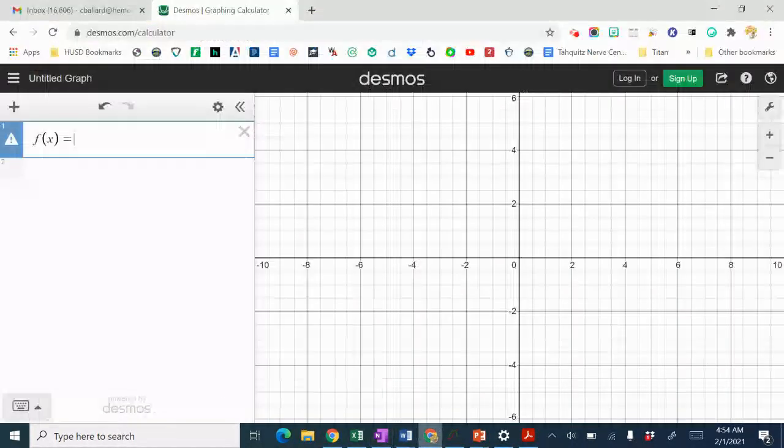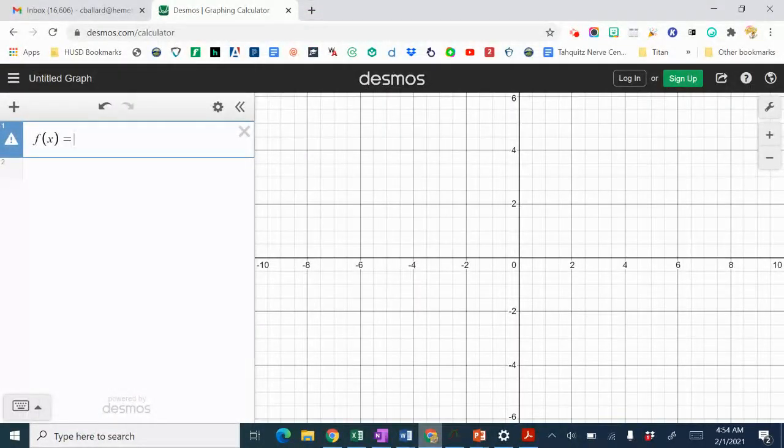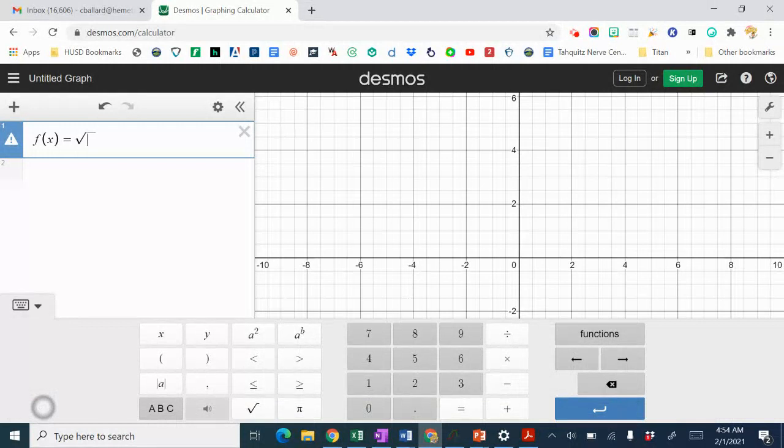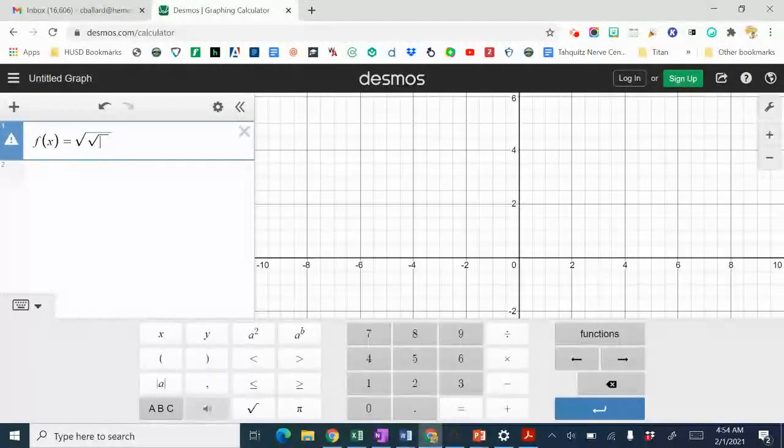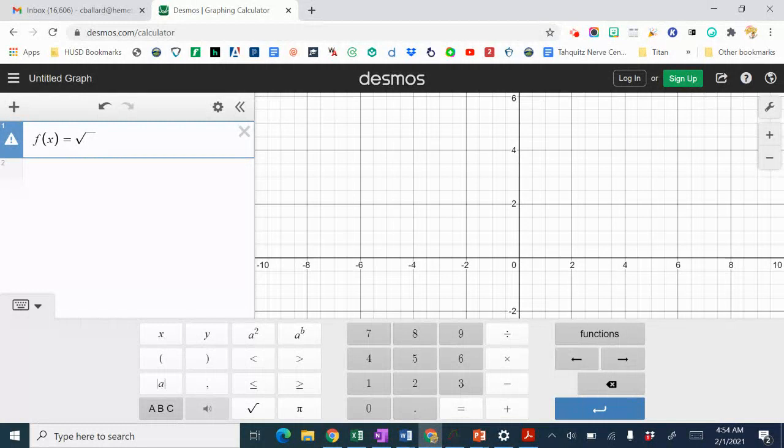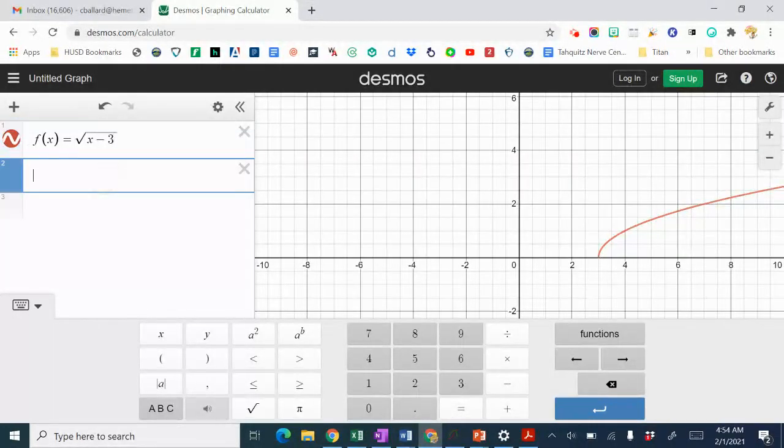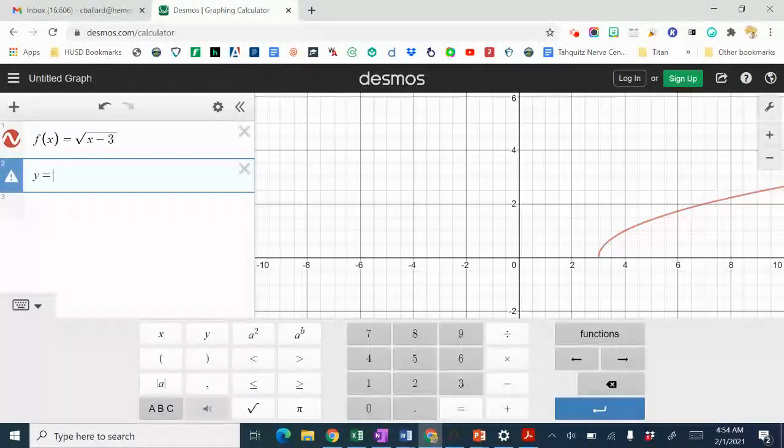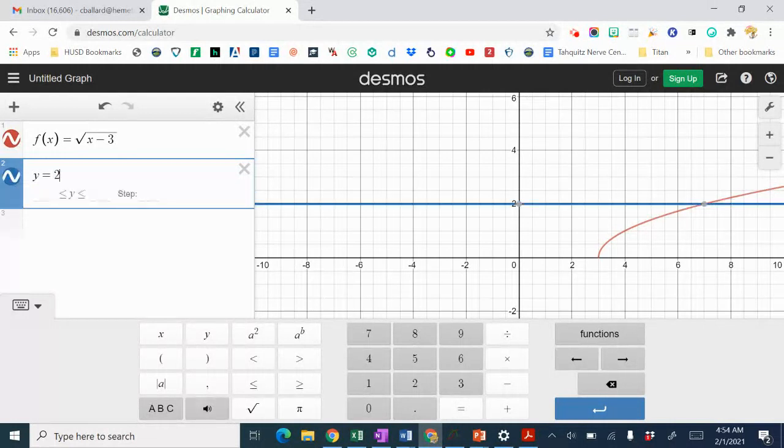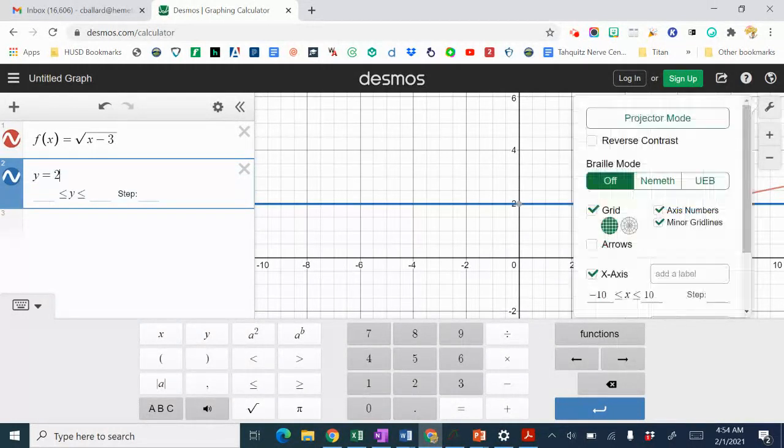We're going to use Desmos to do that. I've already got f of x in there. If you start typing SQRT, that will get you the square root. It's also over here in the functions. I'm going to type x minus 3, and it doesn't matter if you use f of x or y equals. I'm also going to type y equals 2.